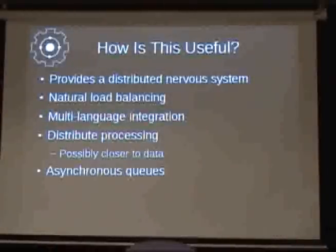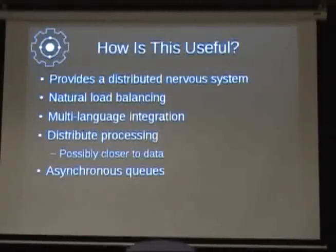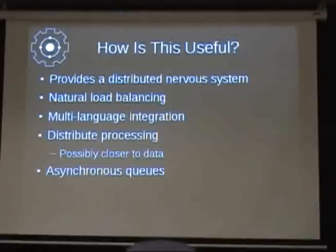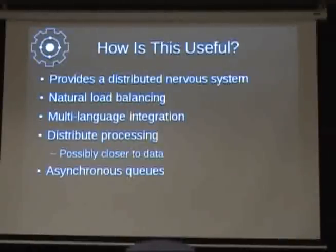Now you have this distributed nervous system for pushing packets around. You get natural load balancing — a worker only grabs work if it's free to do it; it's not going to grab 500 things while other workers are idle. The job server keeps jobs in queue until a worker is available. We have a number of languages being supported now. As for distributed processing, if you have data on some remote machine, you can push the processing to where the data is rather than pulling all the data over the pipe — using the data locality idea from MapReduce. You can also use it for asynchronous queues.